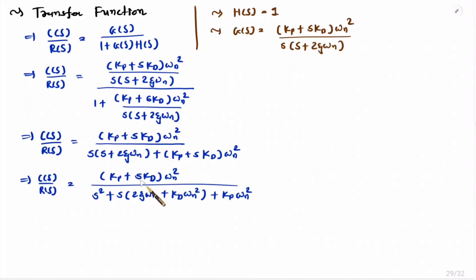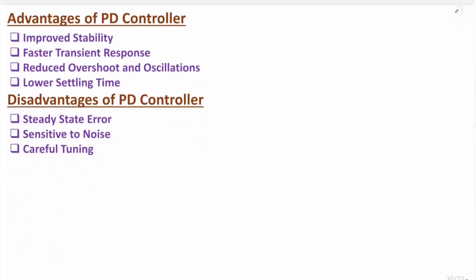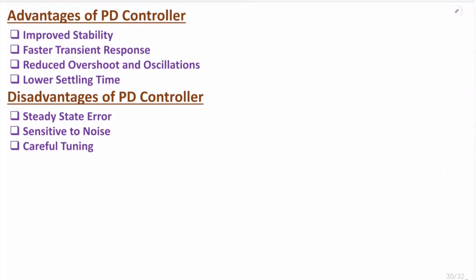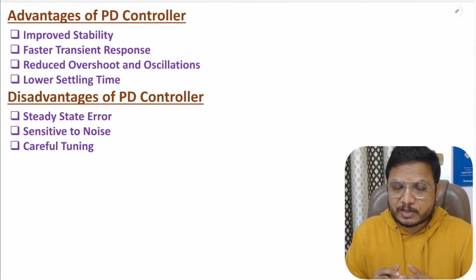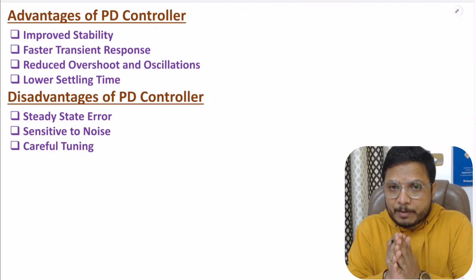Advantages of the PD controller: improved stability, faster transient response due to the proportional controller, reduced overshoot and oscillations, and lower settling time due to the derivative controller. Disadvantages: the PD controller cannot eliminate offset or steady-state error, it is sensitive to noise, and tuning is difficult. That is all about the PD controller. I hope you enjoyed this session — if any confusion remains, post in the comment section. Thank you for watching.